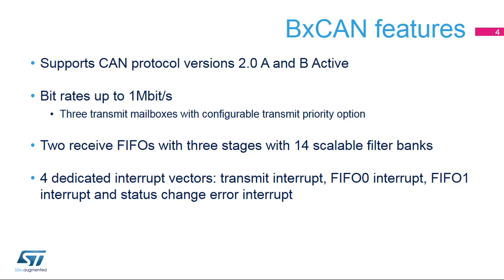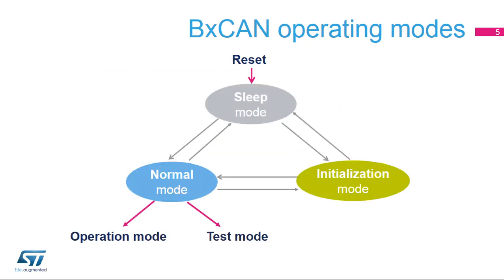This allows the CAN to efficiently manage a high number of incoming and outgoing messages with a minimum CPU load. The BX CAN peripheral also manages four dedicated interrupt vectors. The BX CAN has three main operating modes: initialization, normal, and sleep. After a hardware reset, the BX CAN is in sleep mode, which operates at a lower power.